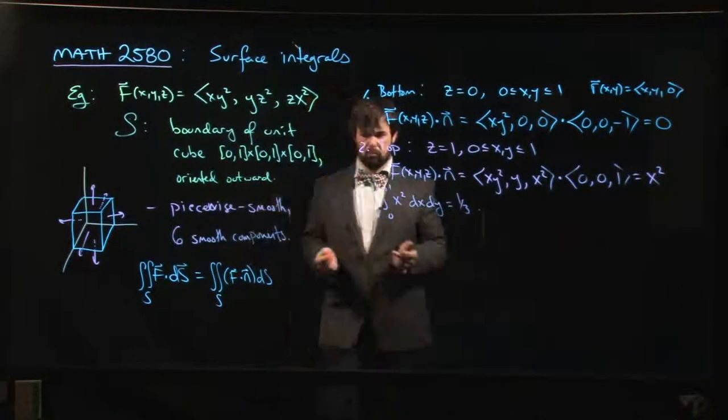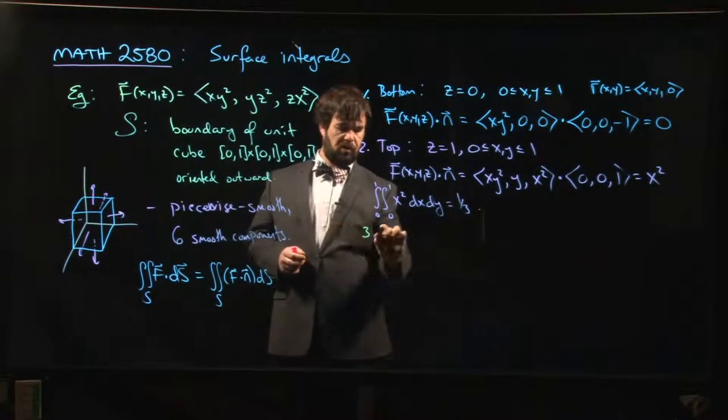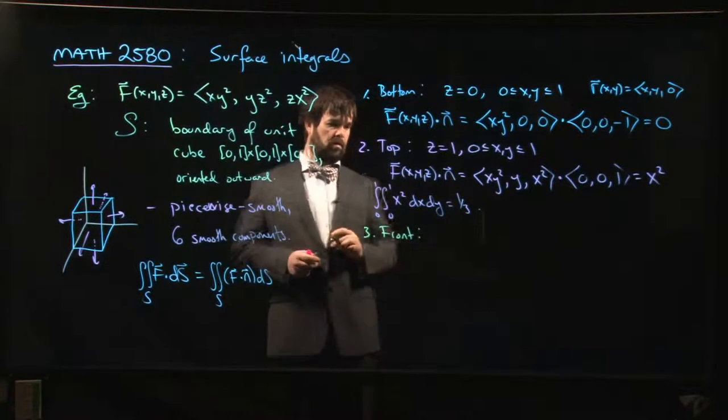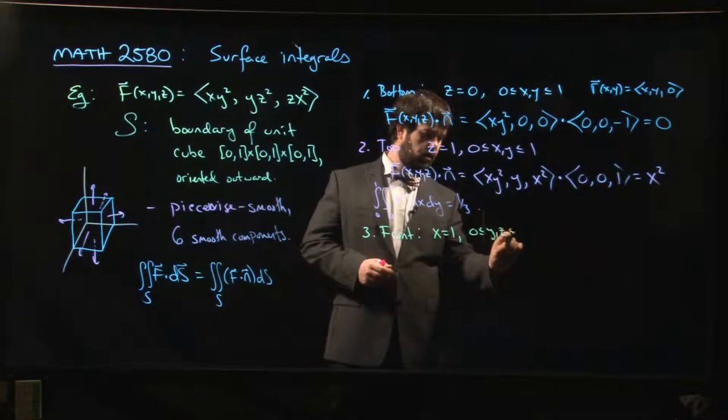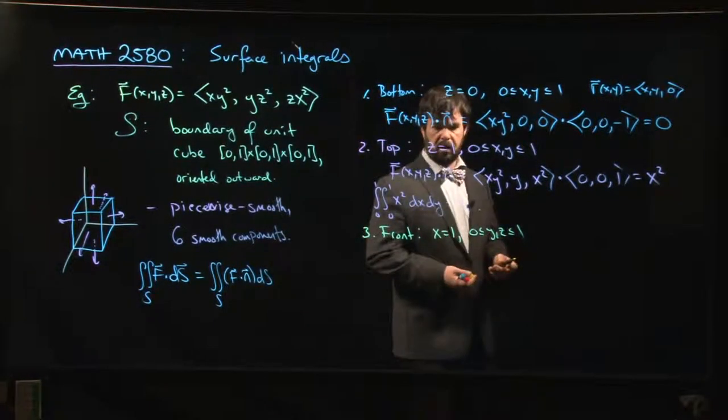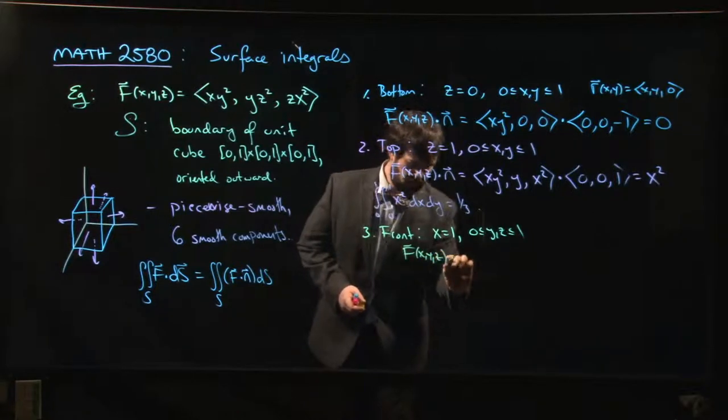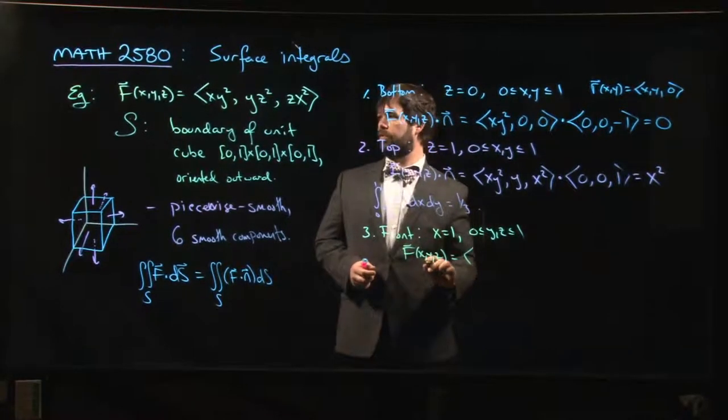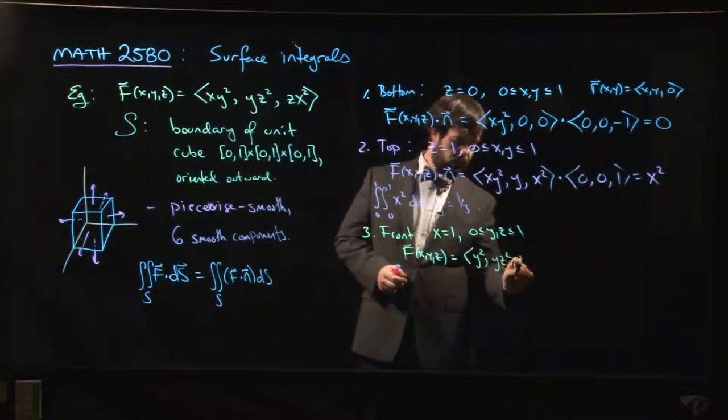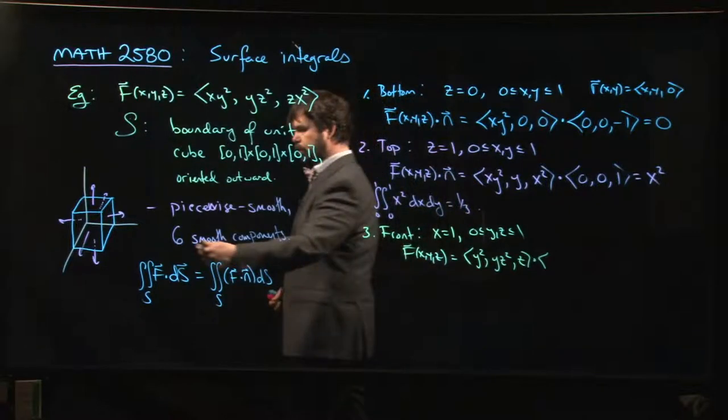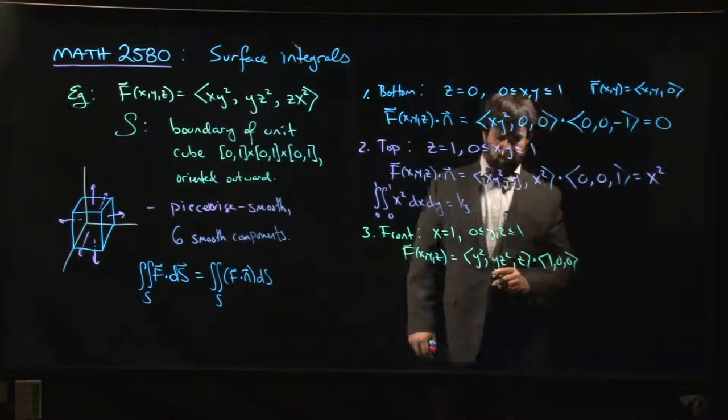Then let's do the front. On the front, x equals one, y and z are between zero and one. So f of (x,y,z) is equal to, so x is one, so (y², y, z²) and z. On the front, the normal vector is plus i, it's (1, 0, 0), so we get y².